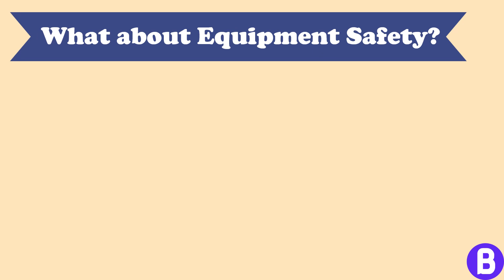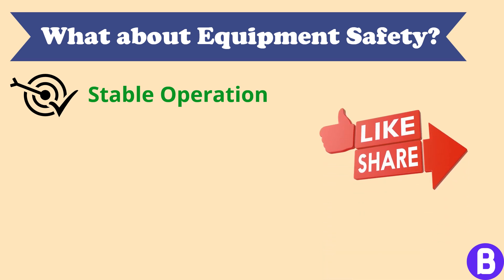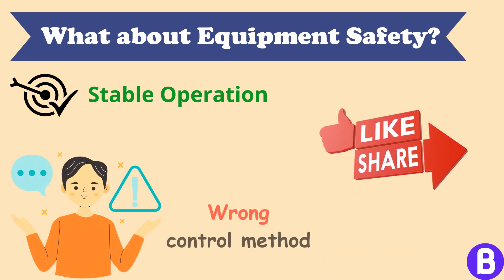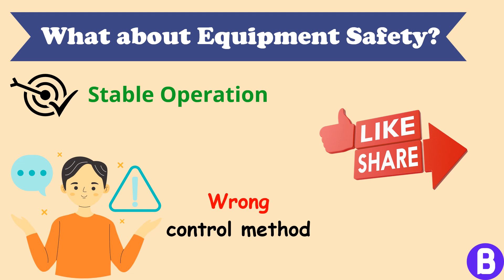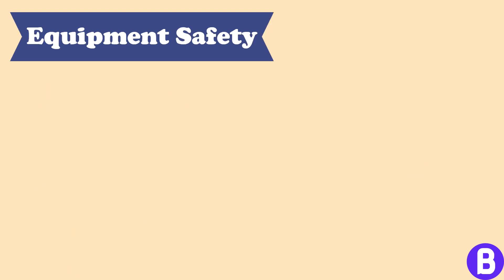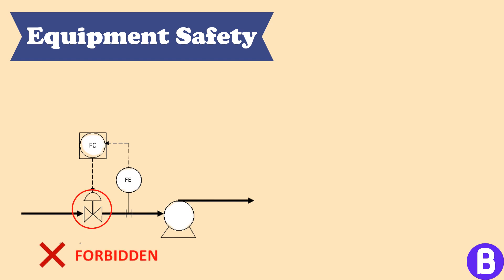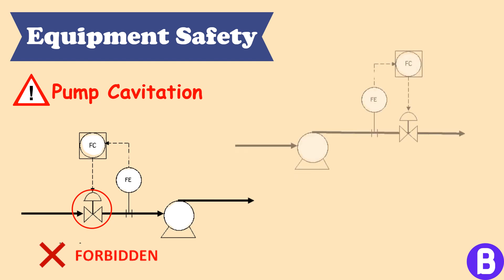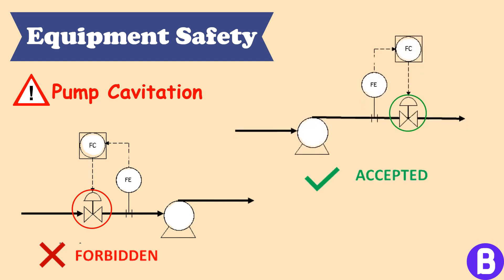The function of process control is to ensure a stable operation of a specific system. However, implementing the control method in the wrong way can cause safety issues and equipment failure. For example, if we want to control the pump flow by placing the control valve on pump suction, this will cause pump cavitation. That's why it's always placed on pump discharge.